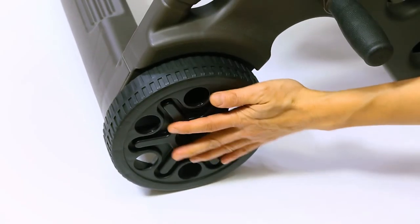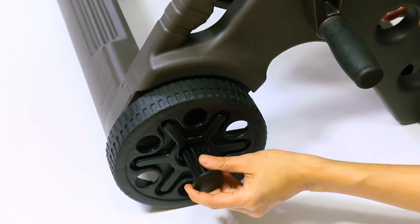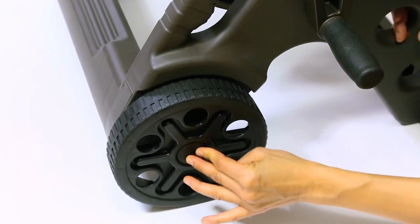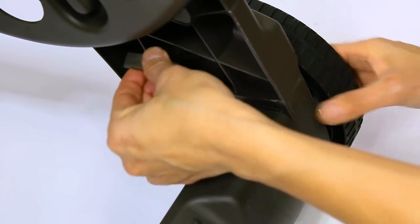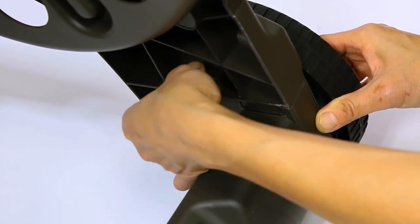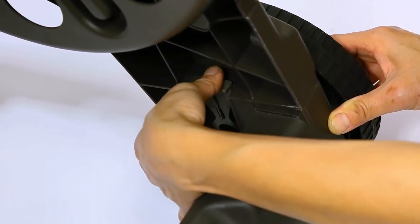Take the remaining wheel and do the same thing on the other side. Secure the wheel and axle position with the C-shaped lock until you hear an audible snap.